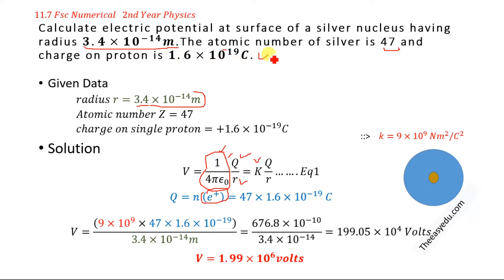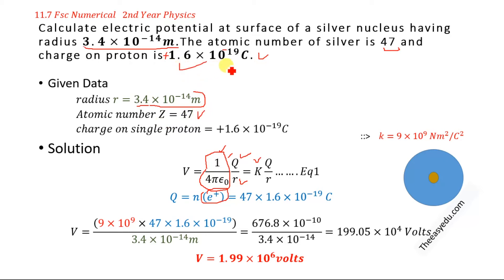The charge on each proton is 1.6 × 10⁻¹⁹ coulombs. Proton and electron have the same magnitude of charge but are considered opposite in sign — proton is positive and electron is negative. The number of protons inside the nucleus of the silver atom is 47, so we multiply 47 by the charge on each proton to get Q = 47 × 1.6 × 10⁻¹⁹ coulombs.